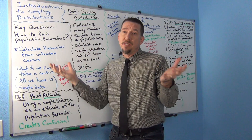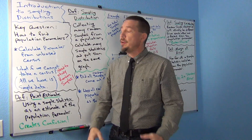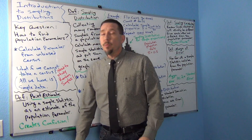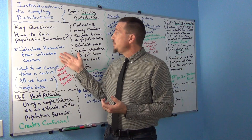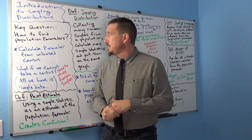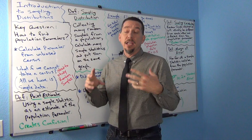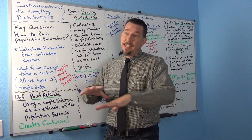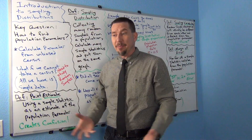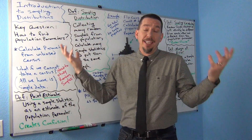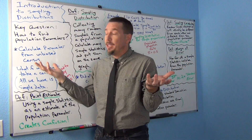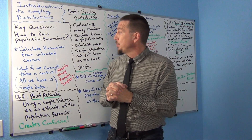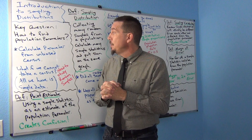How do I find the population mean of millions of people, or how do I find a population percentage of millions of people? Well, one of the ways we could do this is if we had an unbiased census — collecting data from all of the millions of people in the population — so you could literally calculate the population mean and the population proportion.